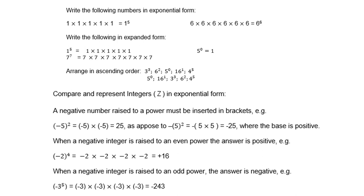Then we can do the opposite, where we write numbers in expanded form. So 1 to the power of 5 will be 1 times 1 times 1, five times. 7 to the power of 7 will be 7 times 7, five times. Of course, 5 to the power of 0 is 1. If you must arrange in ascending order, the smallest number is 5 to the power of 0, because it is 1.